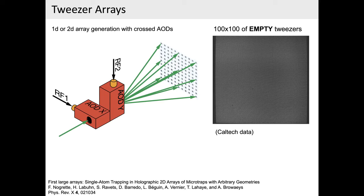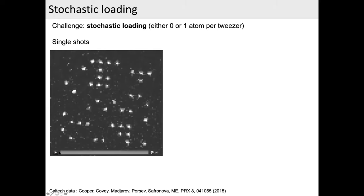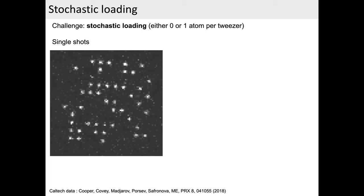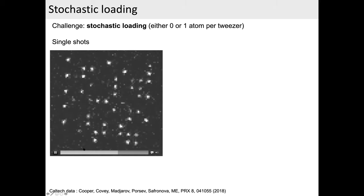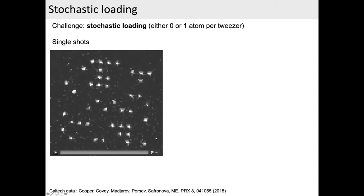The challenge is not generating the traps but filling them with atoms. When you stick the tweezer array into a cold cloud and disperse it, it's a stochastic loading process — either zero or one atom per site. Here I'm showing experimental shots where you repeat that process and see a different pattern each time, with about 50% probability of trapping an atom in a given tweezer. You can average these pictures and get something nice, but for most applications like computing or simulation I actually need something defect-free in each shot.